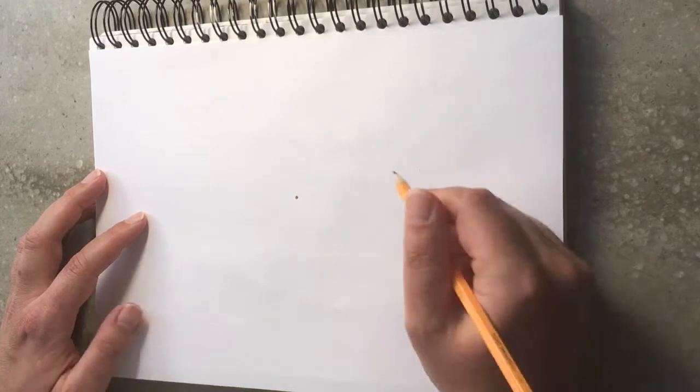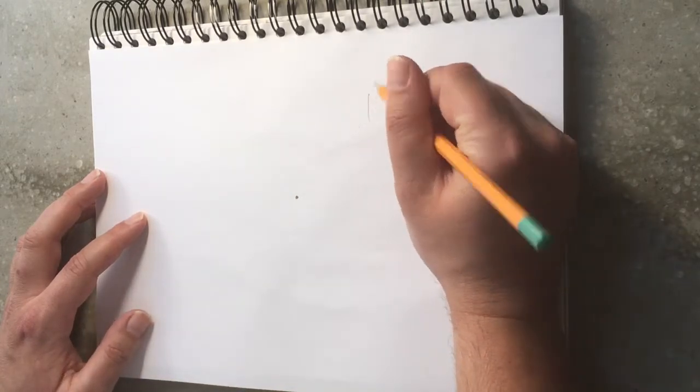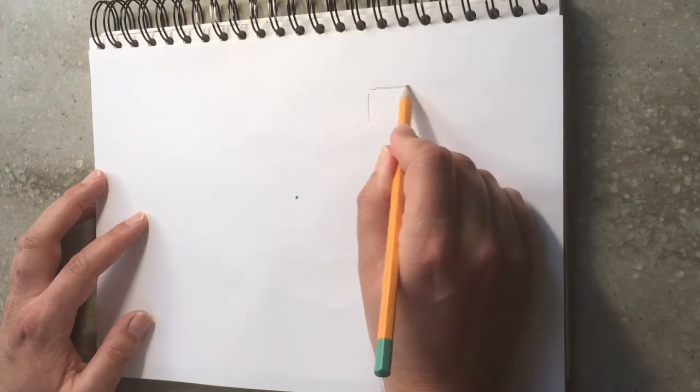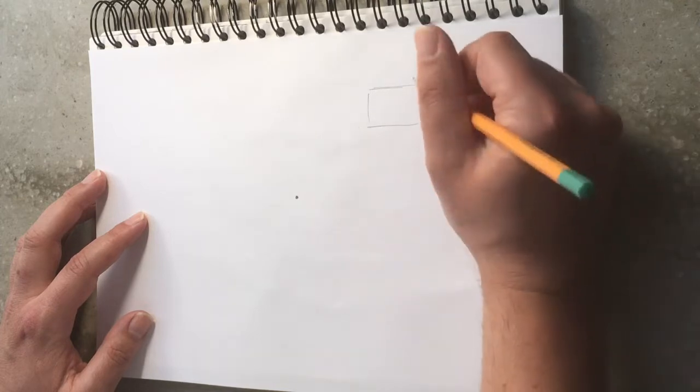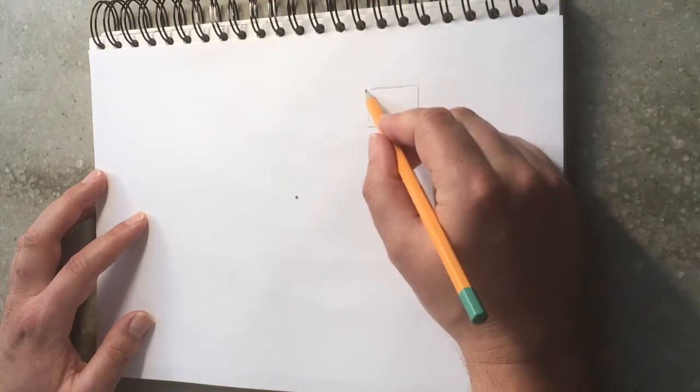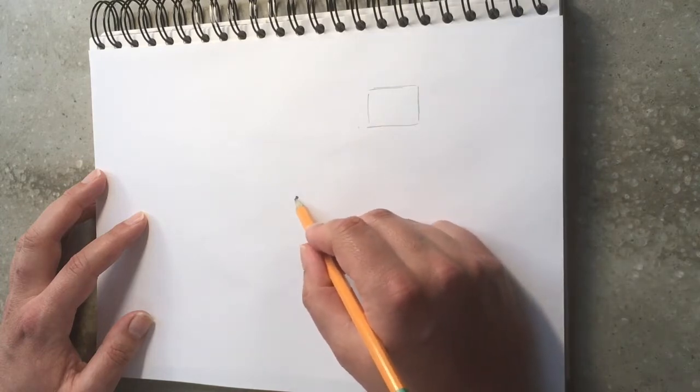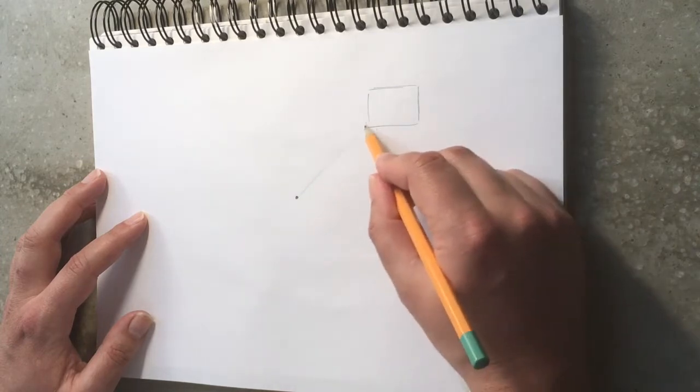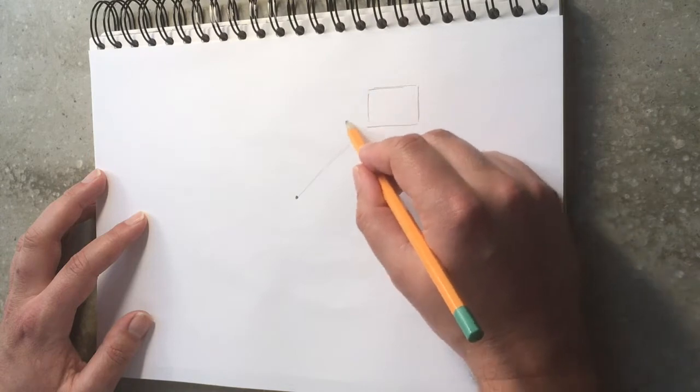Here is our vanishing point. We're going to start with a square. Please use a ruler if you would like to use a ruler, and these lines that we're doing now we want to do them quite light. We need to call these guidelines today because parts of them we will be rubbing out.